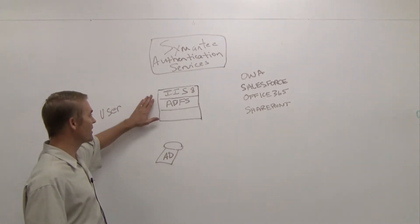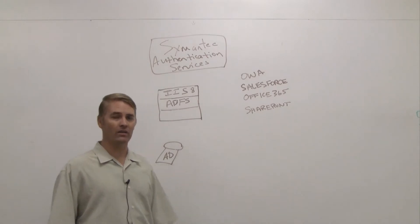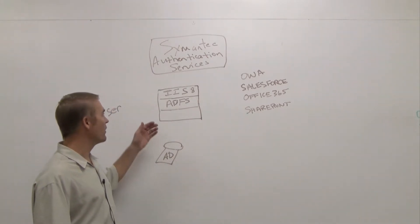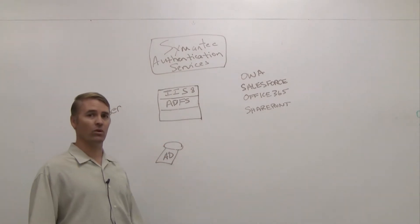Active Directory Federation Services installs out of the box on Windows 2008 or Windows 2012. On Windows 2012, it comes as a role, a roles features add-on to the basic server platform.